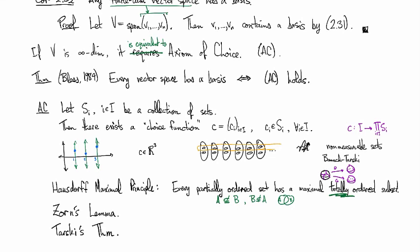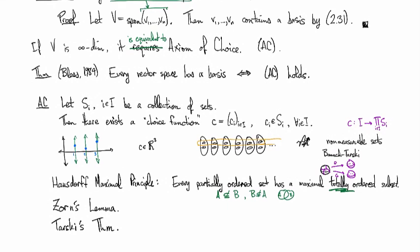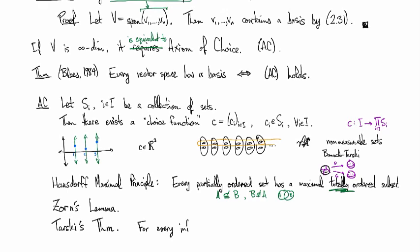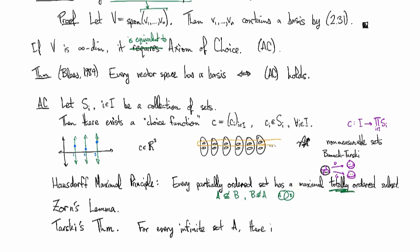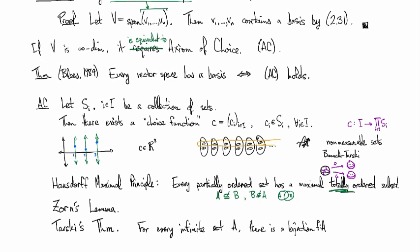There's also Tarski's theorem, and so Tarski's theorem, also not a theorem, that's an axiom, is that for every infinite set A there's a bijection from A to the cartesian product of A with itself.